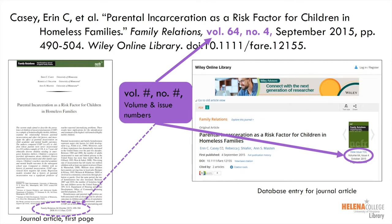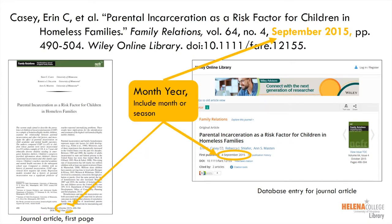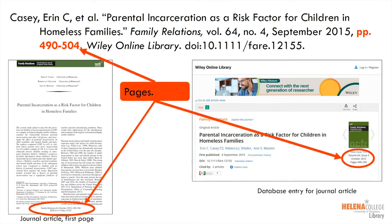Type vol., followed by the volume number, a comma, then no., the issue number, and another comma. Next is the publication date, followed by a comma — give the month or season and year. It is often located near the journal title, volume, and issue numbers. The page numbers are usually found on the database entry, or you can look at the numbering on the PDF version of the article. These are followed with a period.